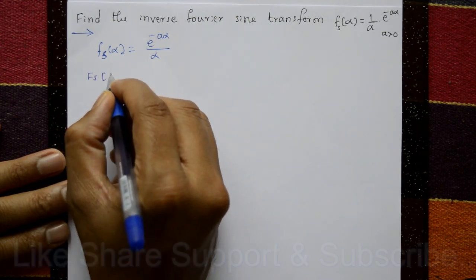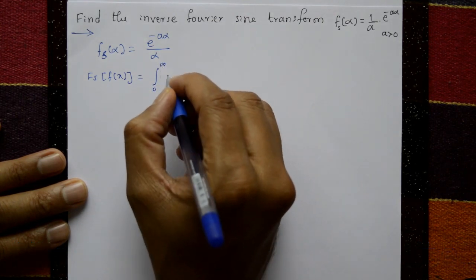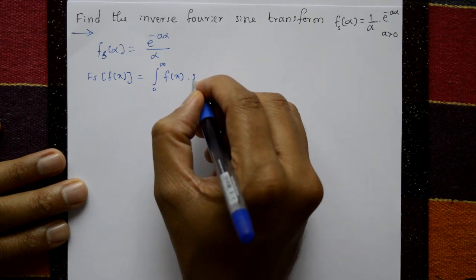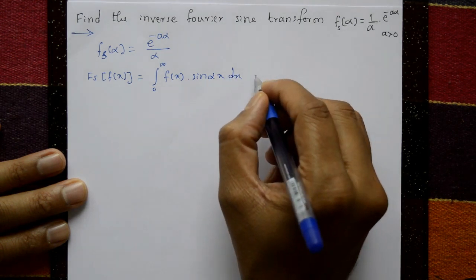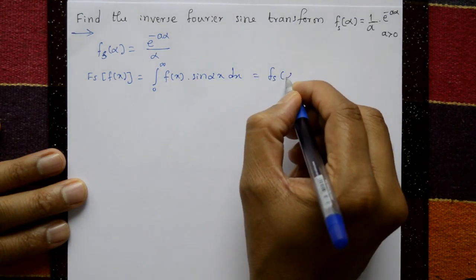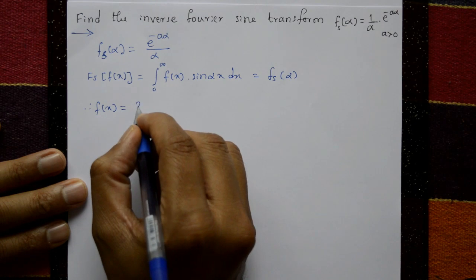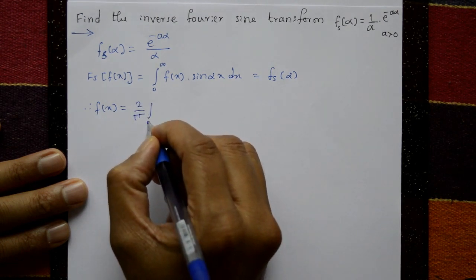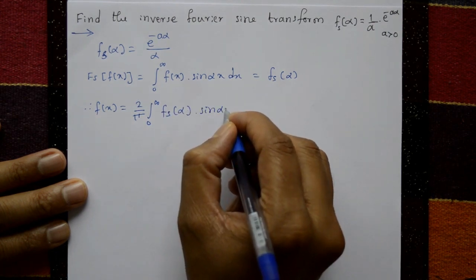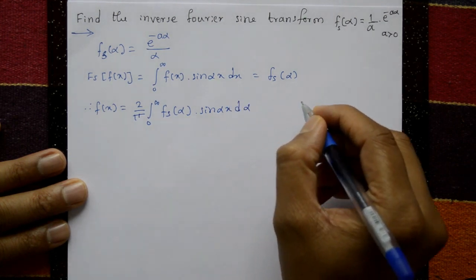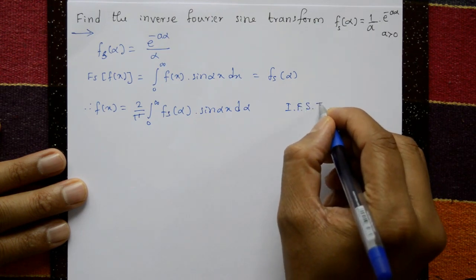The Fourier sine transform of f(x) is defined as F_s{f(x)} = ∫₀^∞ f(x) sin(αx) dx, and this equals F_s(α). The inverse Fourier sine transform is f(x) = (2/π) ∫₀^∞ F_s(α) sin(αx) dα.